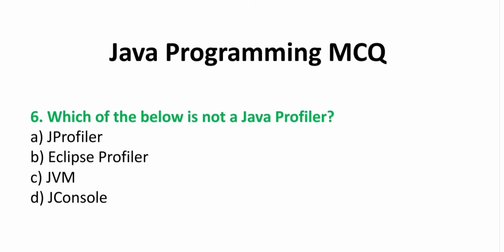Sixth, which of the below is not a Java profiler? A. JP profiler  B. Eclipse profiler  C. JVM  D. J console. Answer: C. JVM.